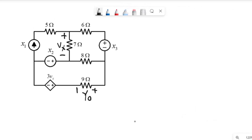In this circuit we have three inputs: X1, X2, and X3. The output has been pre-chosen as a voltage in the 9 ohm resistor on the bottom right. Why not?